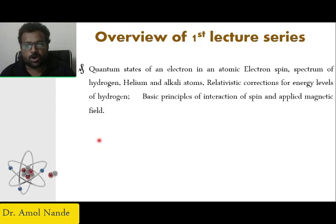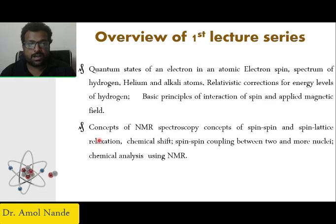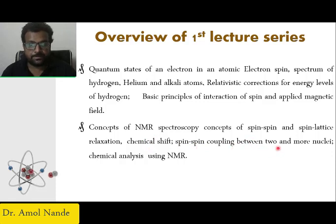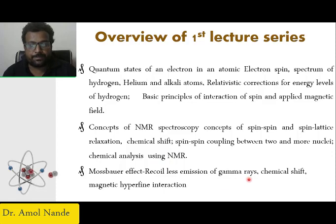All these are like either single electron or double electron systems. Then relativistic correction for levels of hydrogen. Then the basic principle of interaction of spin and applied magnetic field. Then we will go for the concept of NMR spectroscopy, concept of spin-spin and spin-lattice relaxation, what is chemical shift, spin-spin coupling between two or more nuclei, then chemical analysis using NMR. At the end of this lecture series we will see what is the Mossbauer effect - recoilless emission of gamma rays - and chemical shift in Mossbauer effect and magnetic hyperfine structure.